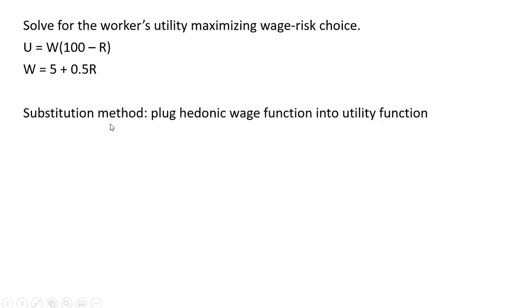Let's now solve for the worker's utility-maximizing wage-risk choice. Here's our utility function, here's our hedonic wage function. We're going to use a substitution method—plug the hedonic wage function into the utility function. Where we see W in the utility function, we're going to replace that with 5 plus one half R. Simplifying the right-hand side.